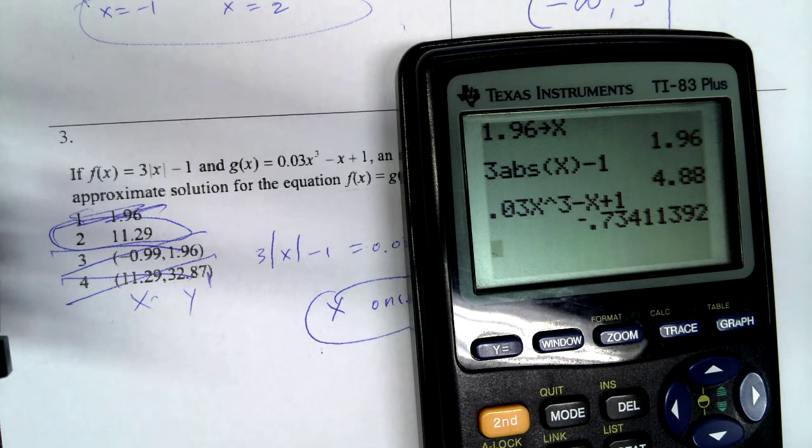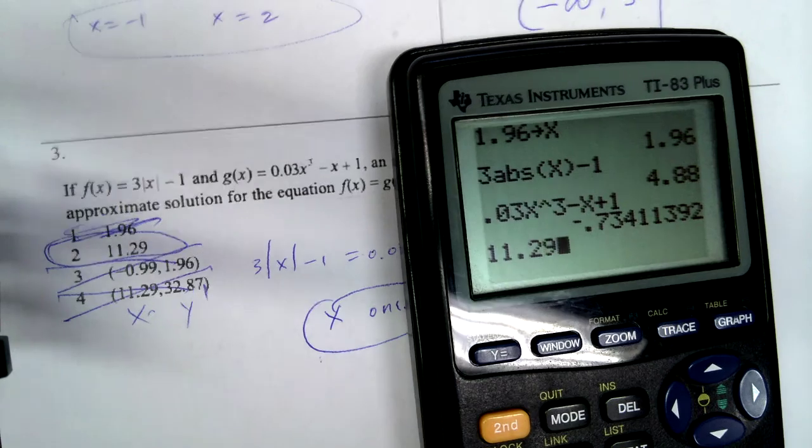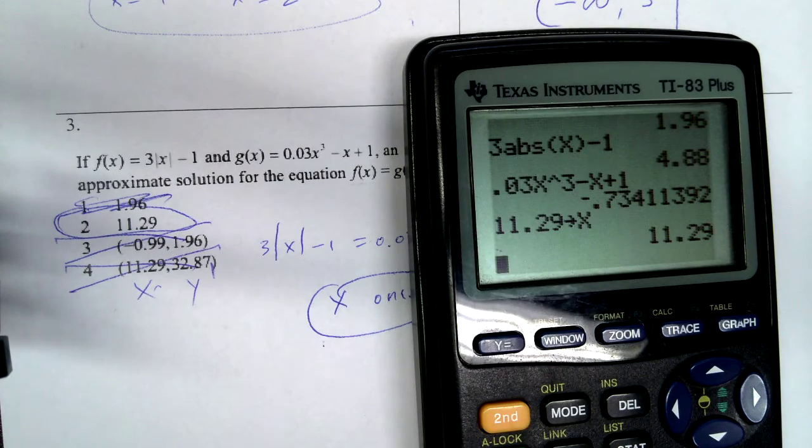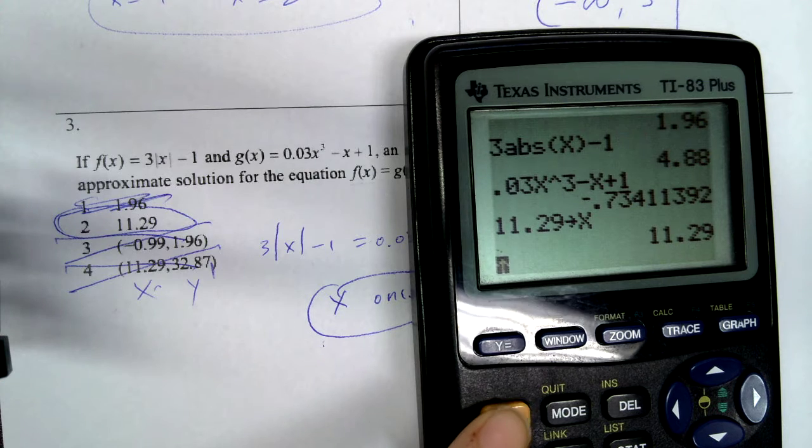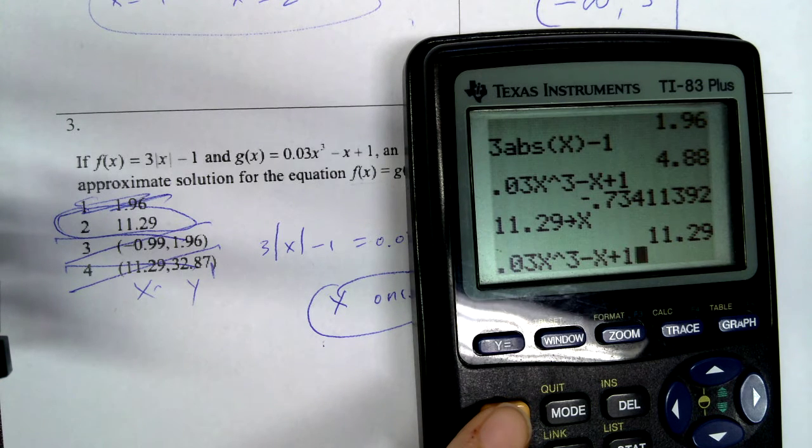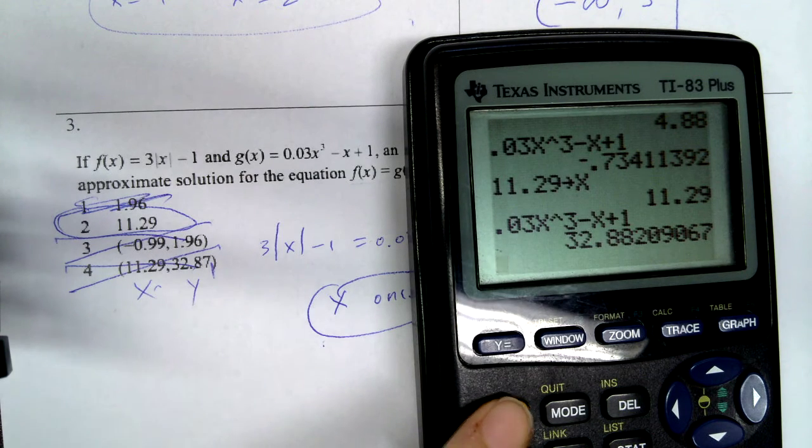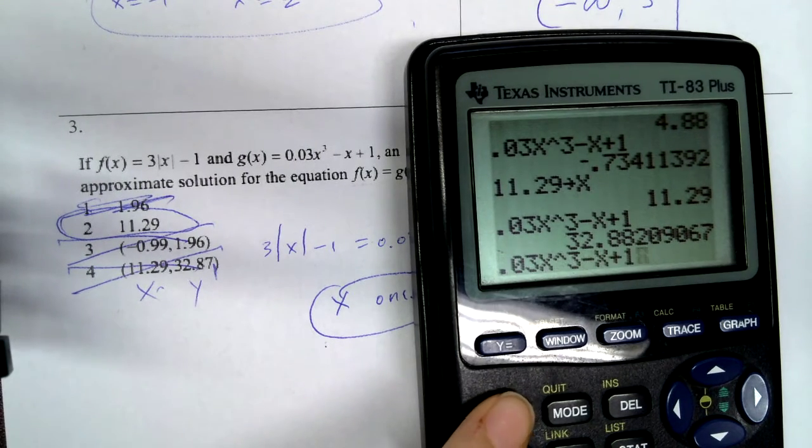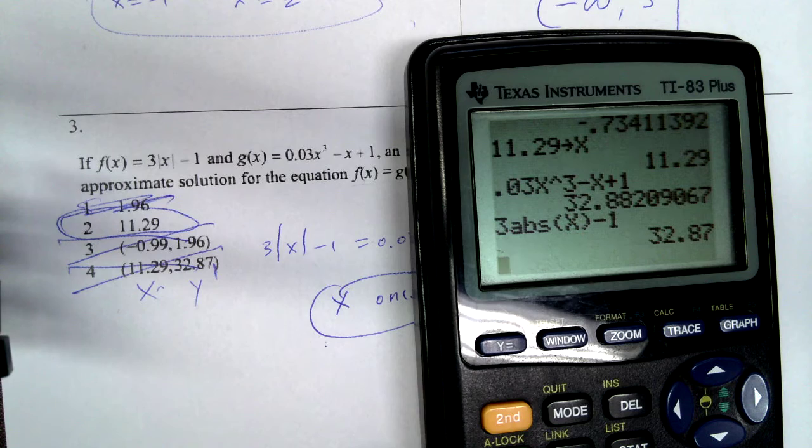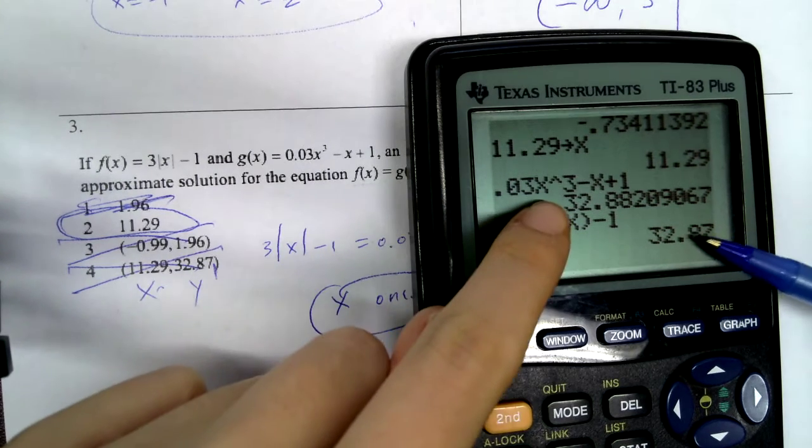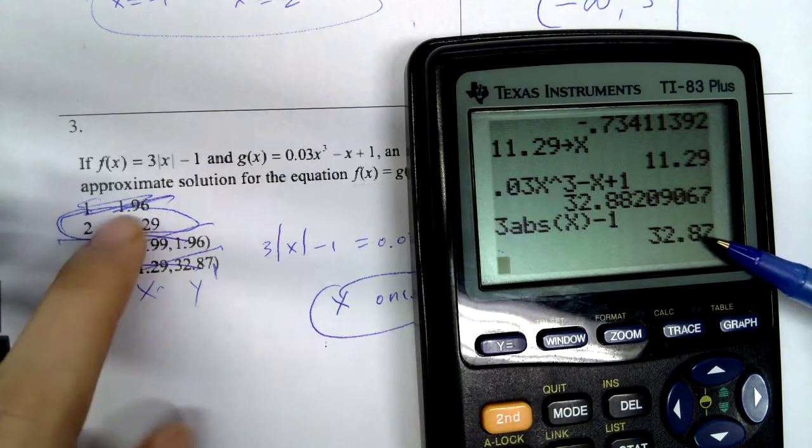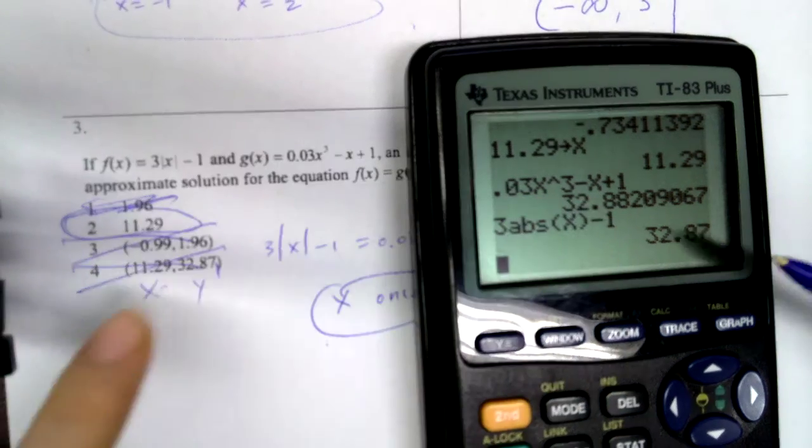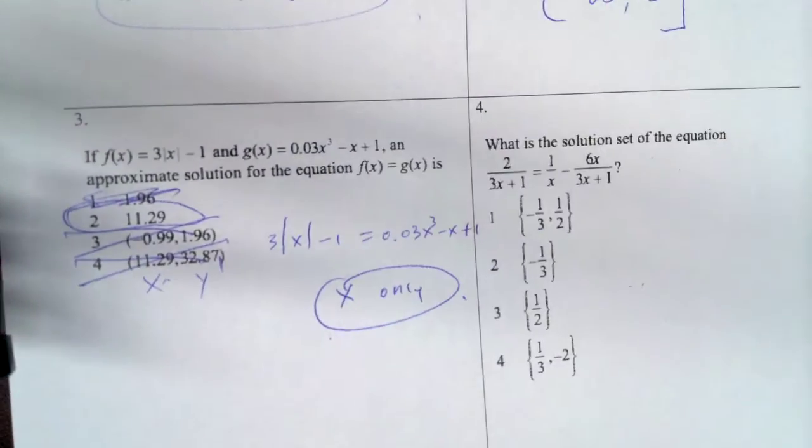But we can also check our answer, right? So I'm going to do 11.29 store x. Okay. Okay, so these, right, it's the approximate solution, so they are about the same. So that tells me that actually my answer is indeed number 2.